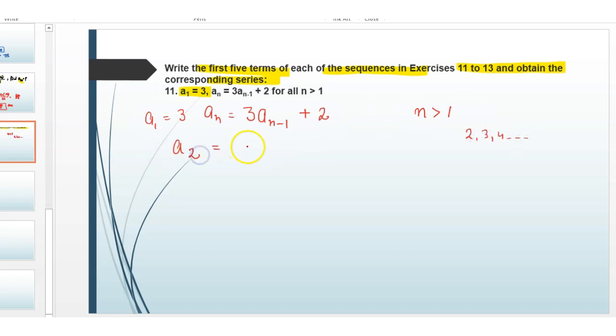So here, a2 equals 3a(2-1) plus 2, which is equal to 3a1 plus 2. And a1 is given as 3, so it is 3 times 3 plus 2, which equals 9 plus 2, equals 11.